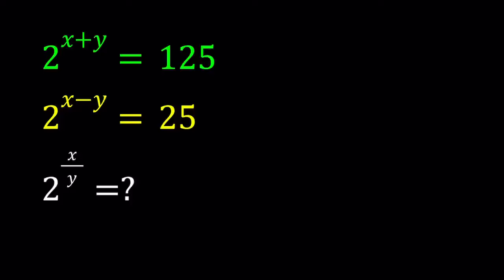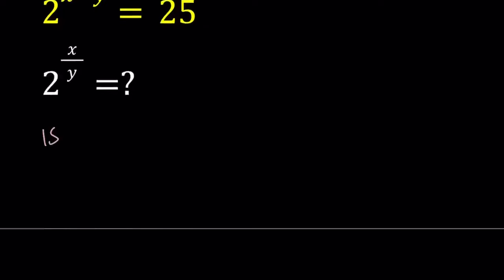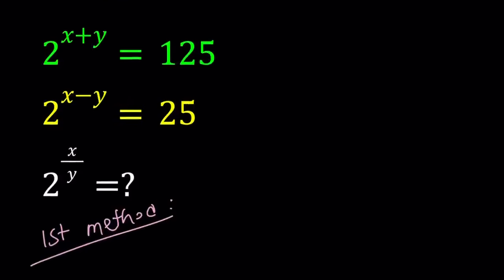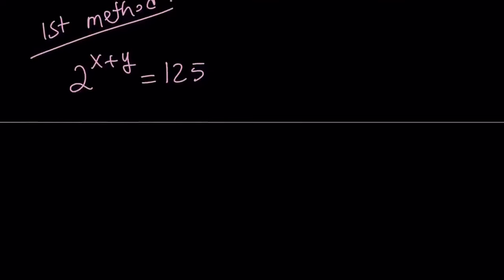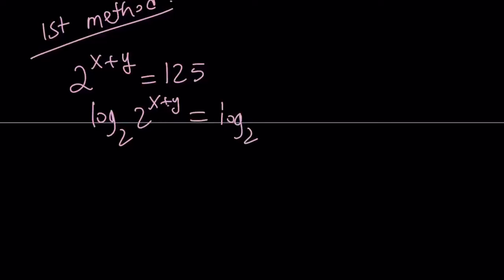I'll be presenting two methods and let's start with the first method. For my first method, I'm going to take these expressions and log both sides. But I want to use base 2 so I can get rid of the exponents. So if you log both sides, you're going to get something like this.